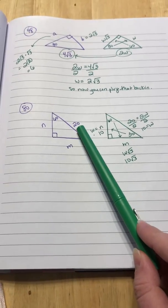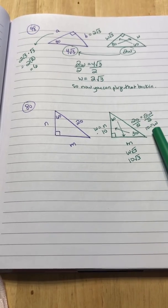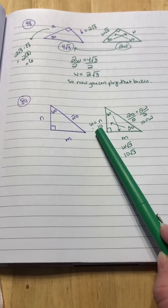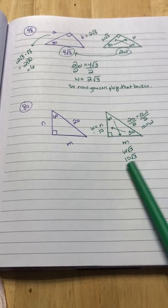All right, so the hypotenuse is 20. That's supposed to be 2w. So if you divide it by 2, w is 10. So that means that n would be 10 because that's a side across from 30. And then across from 60 would be 10 square root of 3.